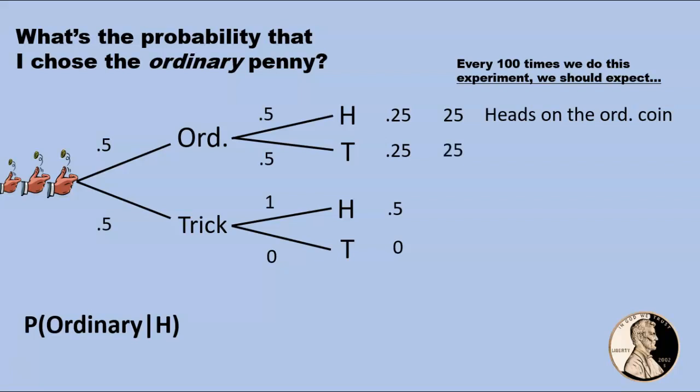For every hundred times we do this experiment, we should expect 25 instances in which we go along the top path. That is, 25 instances in which we get heads on the ordinary coin. We should also expect 25 instances of tails on the ordinary coin, and also 50 instances of heads on the trick coin, and of course, no instances of tails on the trick coin.